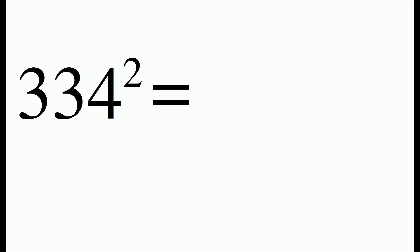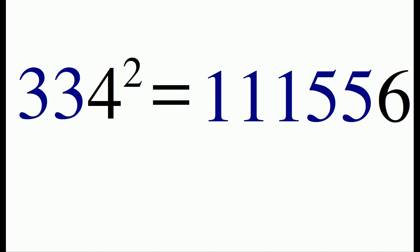In another example, we have 334 squared. We start by writing the number 6, and then we count how many times the digit 3 appears in the number. In 334, that's 2 times. So we write the same number of 5's, and we write an extra number of 1's. So 334 squared will be 111556.